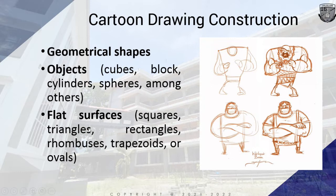Flat surfaces on a subject may be made of flat geometrical shapes like squares, triangles, rectangles, rhombuses, trapezoids, ovals, and others. Learning how to draw using geometrical shapes is one way to help animators draw what they see. That's how we do cartoon drawing construction.